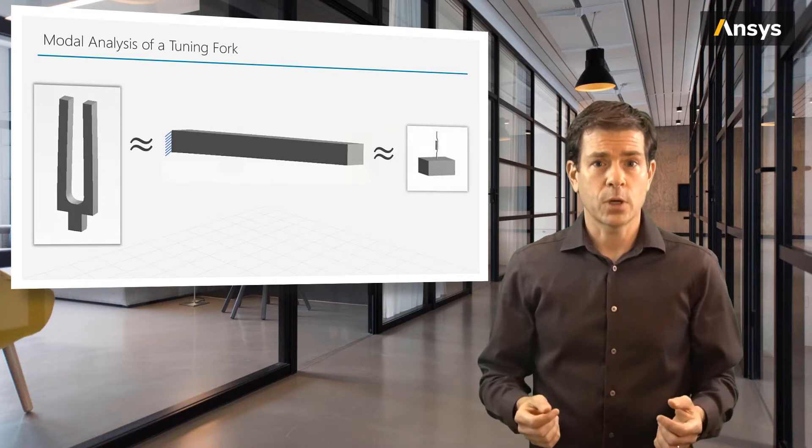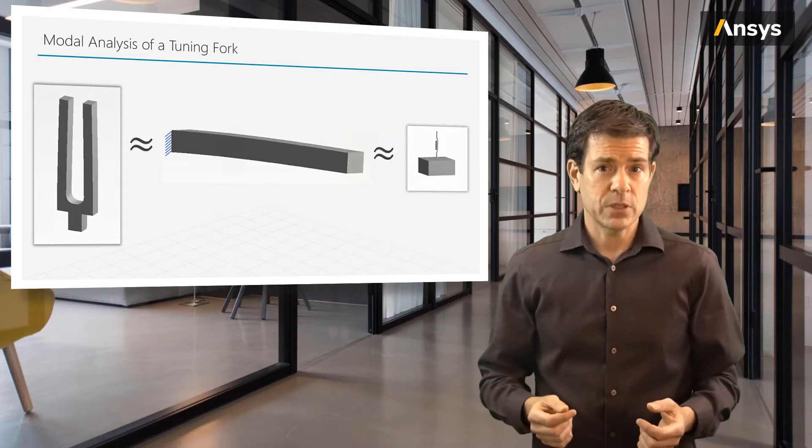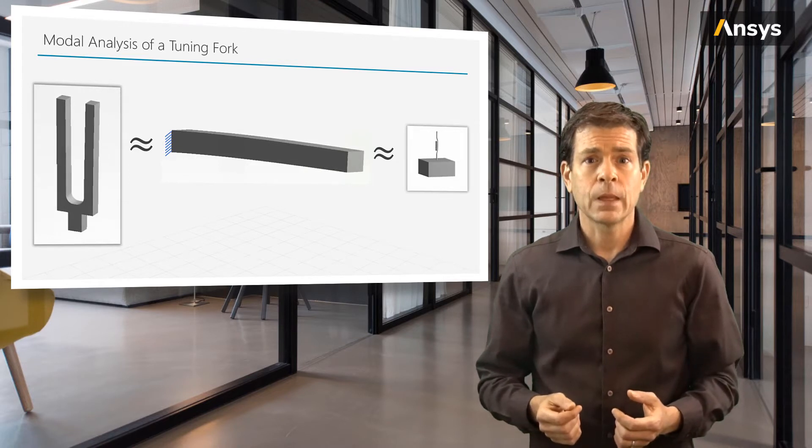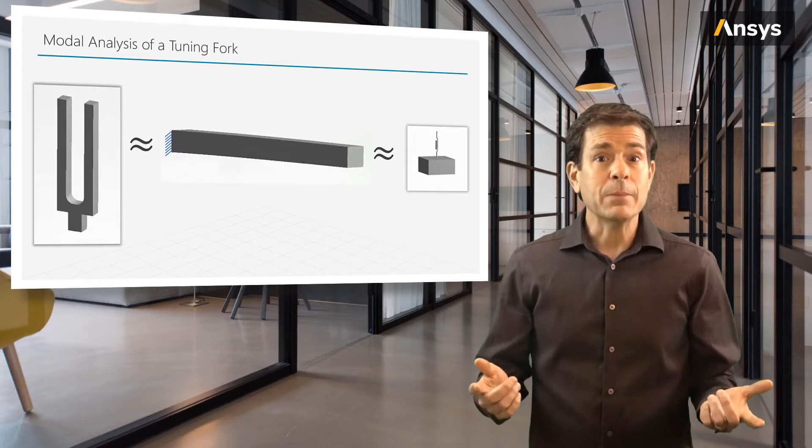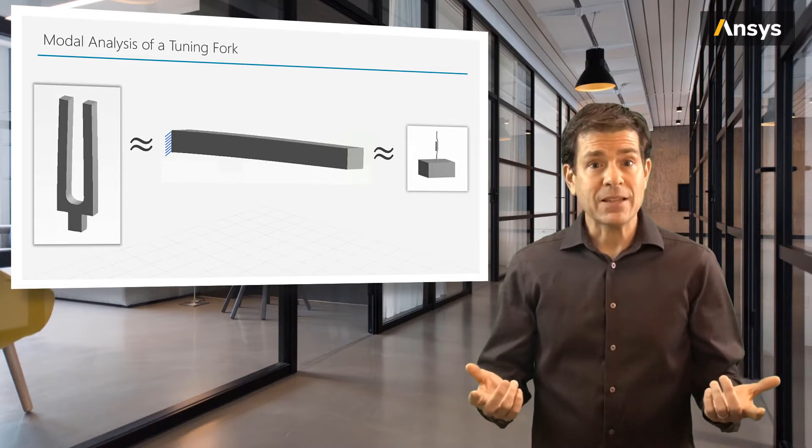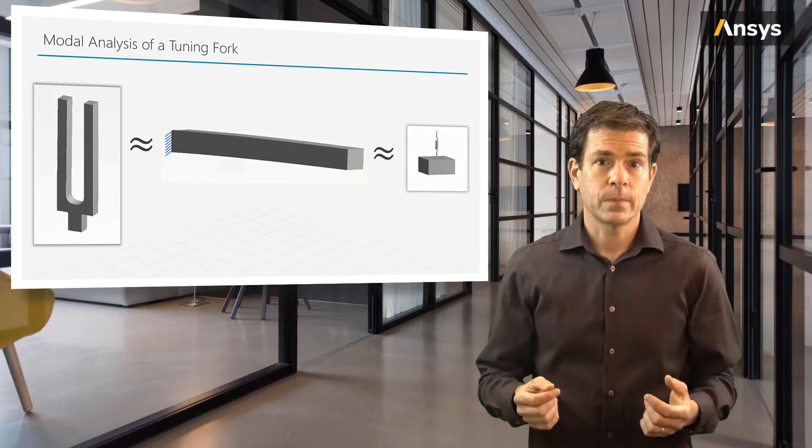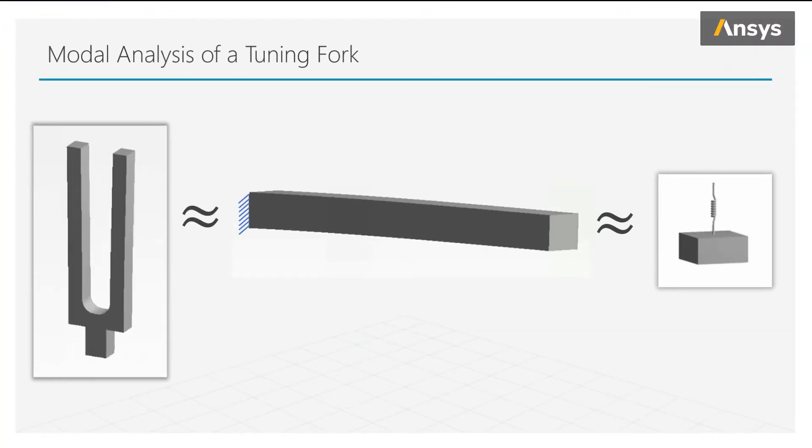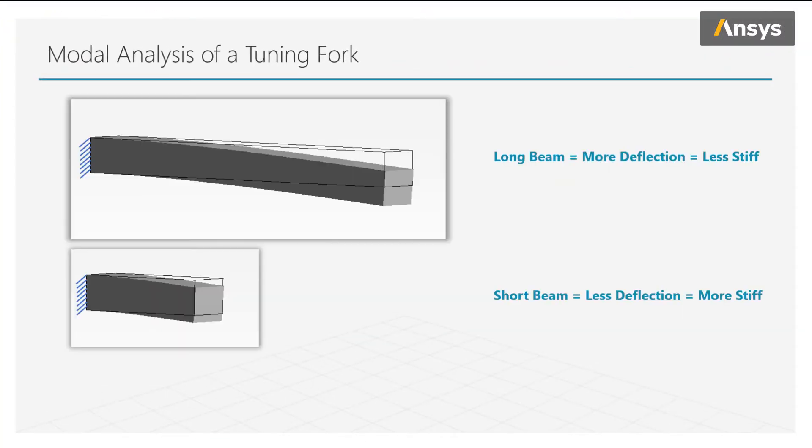So getting back to our tuning fork, it is not a single degree of freedom system, but we can think of it like a cantilever beam, where that beam is bending and the beam acts like a simple spring, and the mass of the beam is the mass hanging on that spring. Now a cantilever beam is fixed on one end and it's free on the other. If we have a long beam and push on the end, it will deflect more than a short beam.